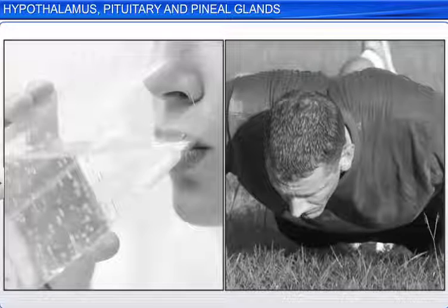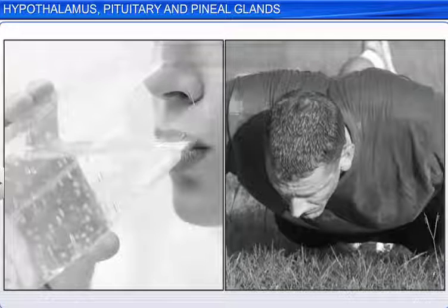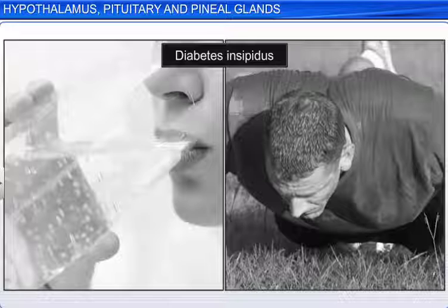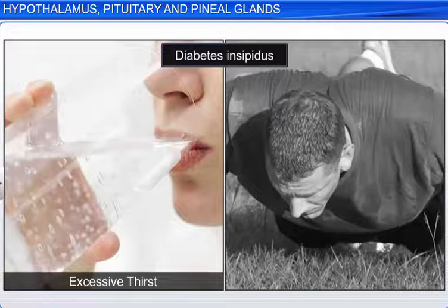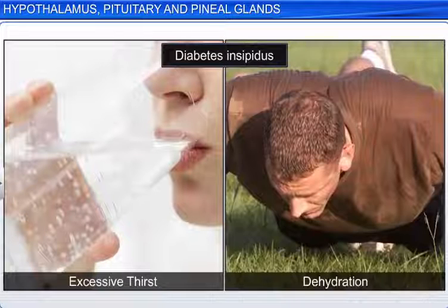Hyposecretion of the anti-diuretic hormone leads to diabetes insipidus. It is characterized by the excretion of dilute urine several times a day, resulting in excessive thirst and dehydration.